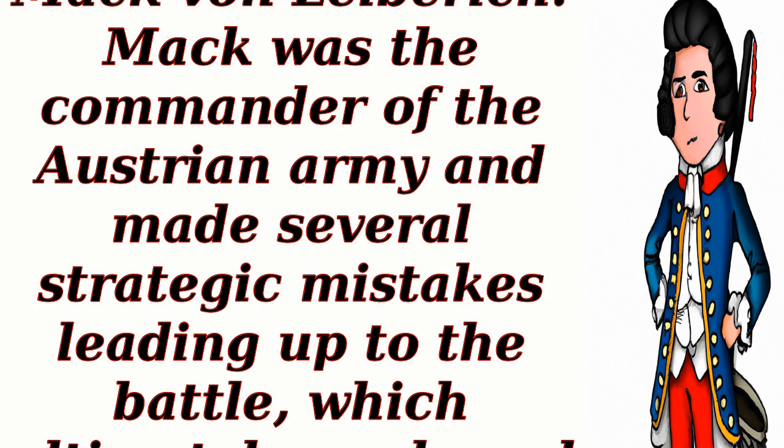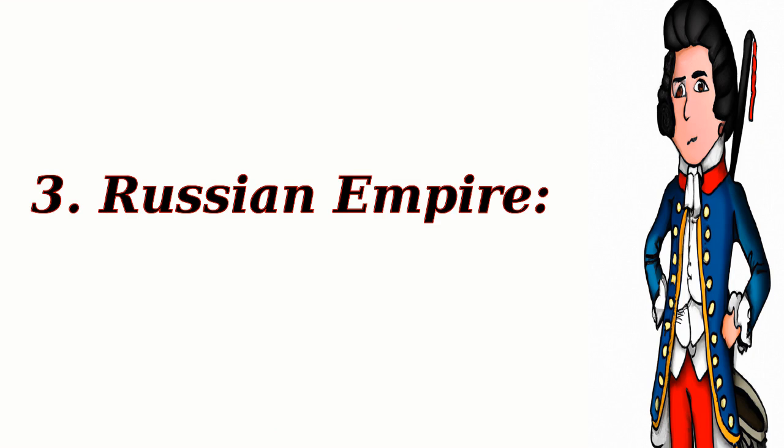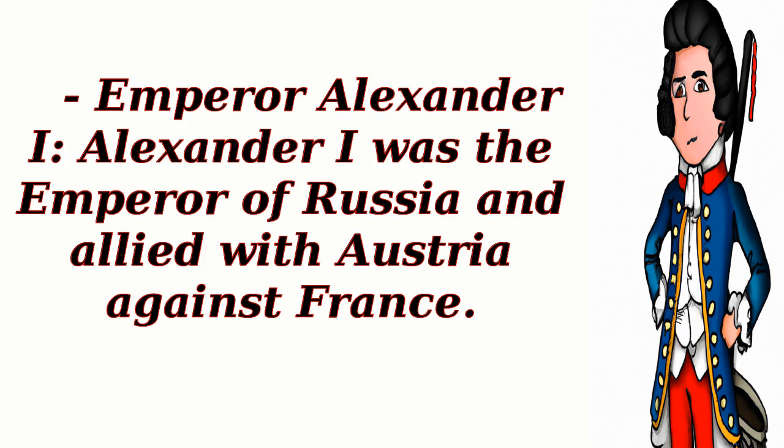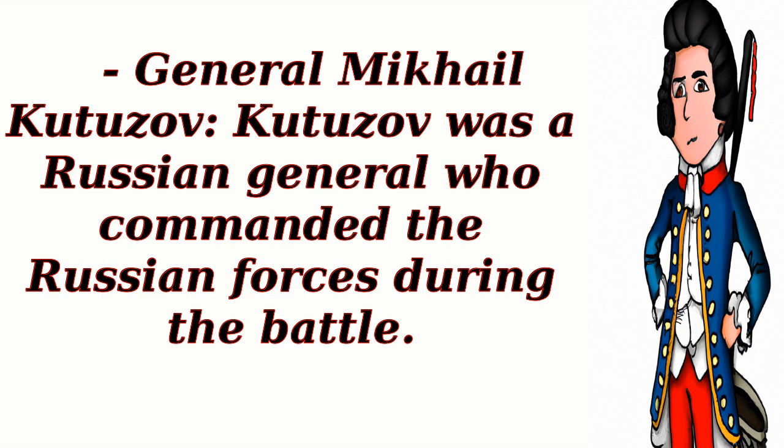3. General Karl Mack von Lieberich — Mack was the commander of the Austrian army and made several strategic mistakes leading up to the battle, which ultimately weakened the Austrian position. 3. Russian Empire. Emperor Alexander I — Alexander I was the emperor of Russia and allied with Austria against France. 4. General Mikhail Kutuzov — Kutuzov was a Russian general who commanded the Russian forces during the battle.